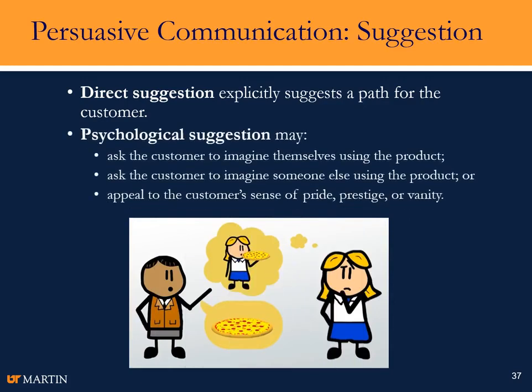Psychological suggestion is a little more complex. You might ask the customer to imagine themselves using the product — some sort of self-visualization. You could ask them to imagine somebody else using the product, maybe somebody they know and respect, like a professor or a major public figure. You can also appeal to a customer's sense of pride, prestige, or vanity. For example, if you're selling a tractor, you might appeal to what their neighbors might think — whether they get a John Deere, a Kubota, or a Case IH, each brand has some connotation.